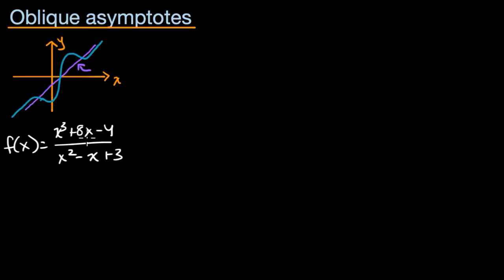When we look at just what's happening in this function, the numerator is going to be growing faster than the denominator when x gets very positive or very negative, because the highest degree term in the numerator is a third degree term, while in the denominator it's only x squared.